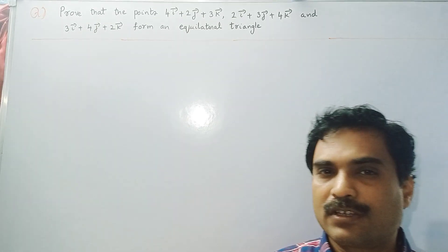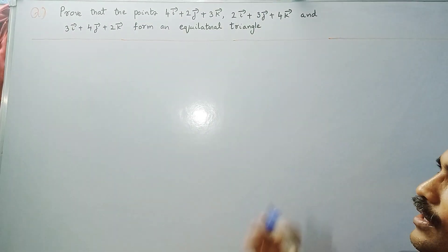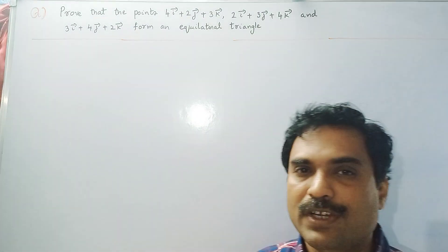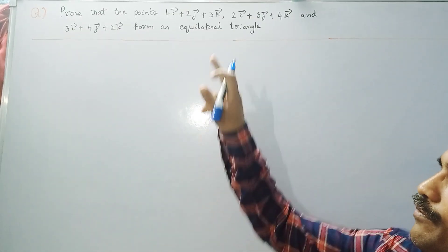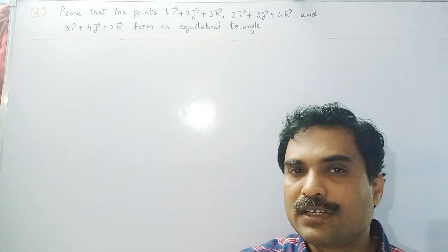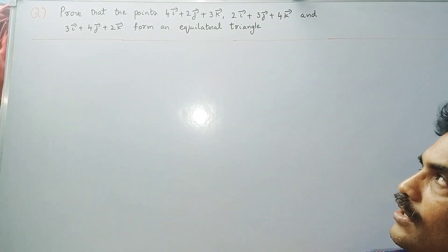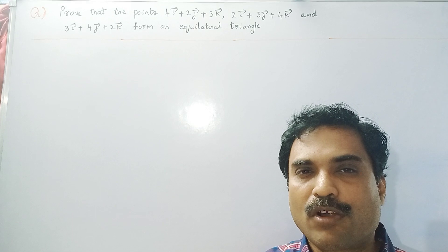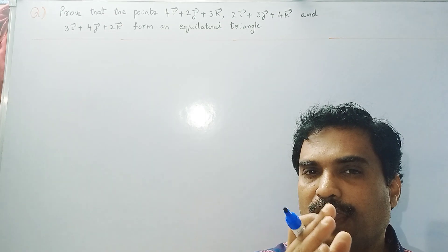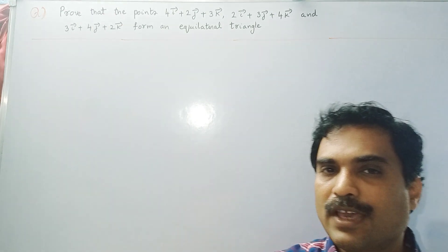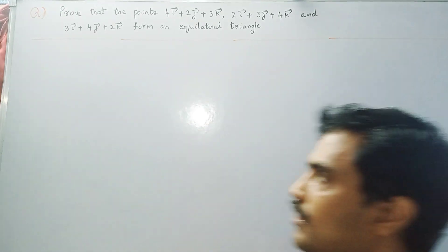For an equilateral triangle, all three sides must be equal. In this problem, they have given three position vectors and are asking us to show that these three position vectors form an equilateral triangle. We'll find the three sides — vector AB, vector BC, and vector AC — then find their moduli, and show that |AB| = |BC| = |AC|.